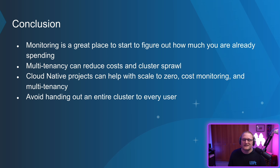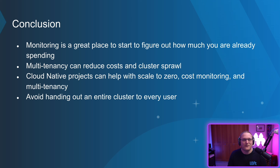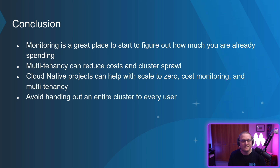So in conclusion, monitoring is a great place to start to figure out how much you're already spending. Multi-tenancy can reduce costs and cluster sprawl. There are cloud-native projects that can help you scale to zero, help with cost monitoring, help with multi-tenancy, and even help with chargeback. Definitely avoid handing out an entire cluster to every user. Start monitoring, start looking at multi-tenancy, look at namespacing, and then if you want to go further, look at vCluster. After that, look at other projects that may help with the other things you need to do, and avoid handing out a cluster to every user.